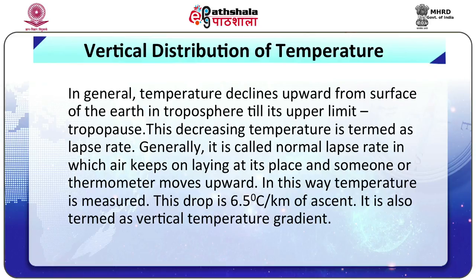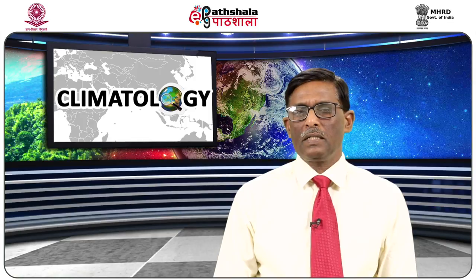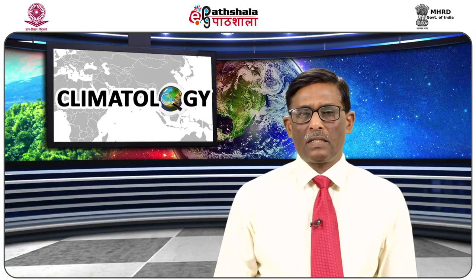In general, temperature declines upward from the surface of the earth in the troposphere till its upper limit, that is the tropopause. This decreasing temperature is termed as the lapse rate. Generally, it is called the normal lapse rate, in which air stays in place and someone or a thermometer moves upward. This drop is 6.5 degree Celsius per kilometer of ascent, and it is also termed as the vertical temperature gradient. The normal lapse rate is not always the same but differs depending upon height, season, latitude, or other numerous local factors.